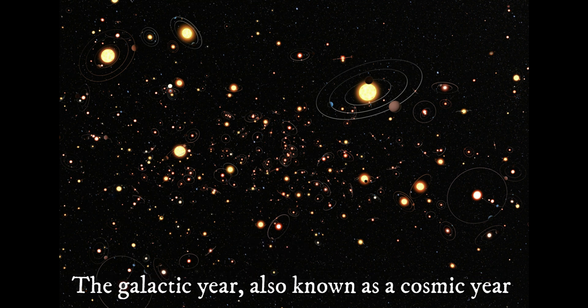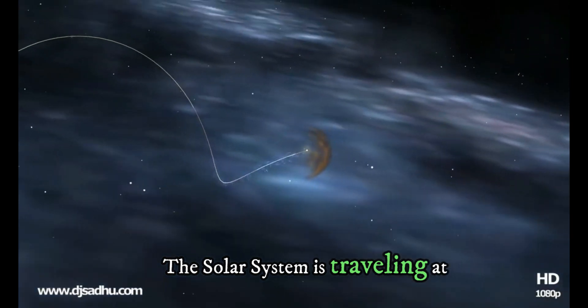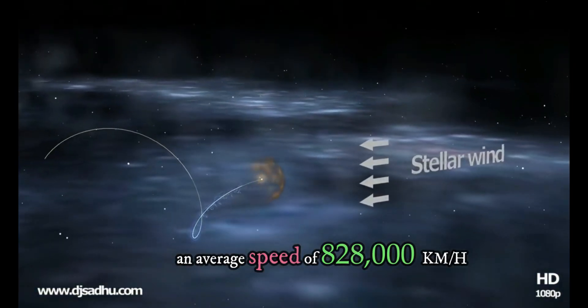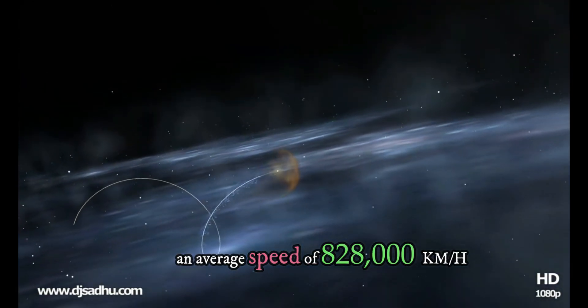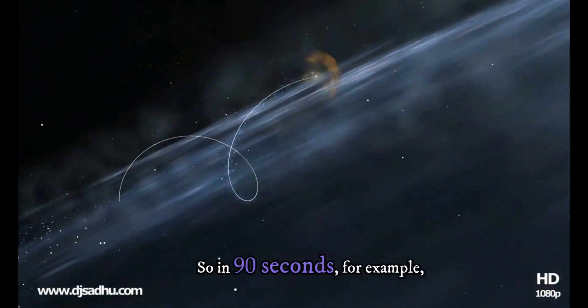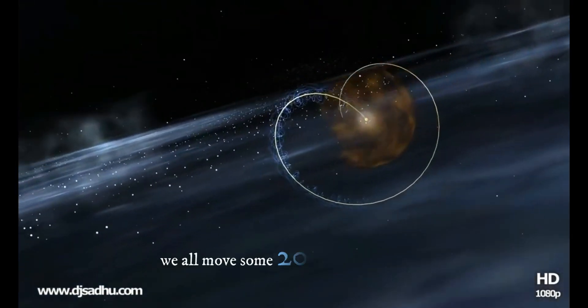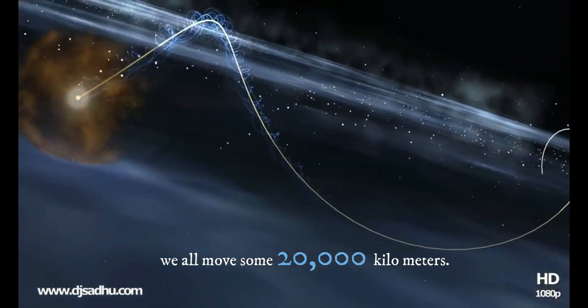How long would it take for a galactic year? The galactic year, also known as a cosmic year: the solar system is traveling at an average speed of 828,000 kilometers per hour. So in 90 seconds, for example, we all move some 20,000 kilometers.